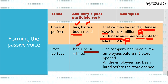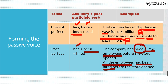The company had hired all the employees before the store opened. So who receives the action? All the employees. So I say 'all the employees', then 'had', plus 'being', then the verb in participle — in this case it is 'hired', this is a regular verb, so I copy the same. Before the store opened — I copy the same: before the store opened.